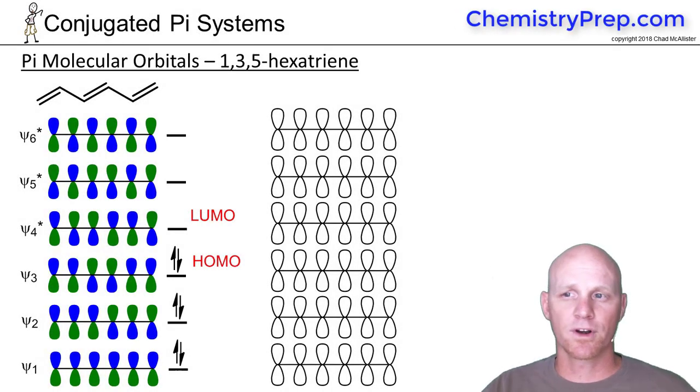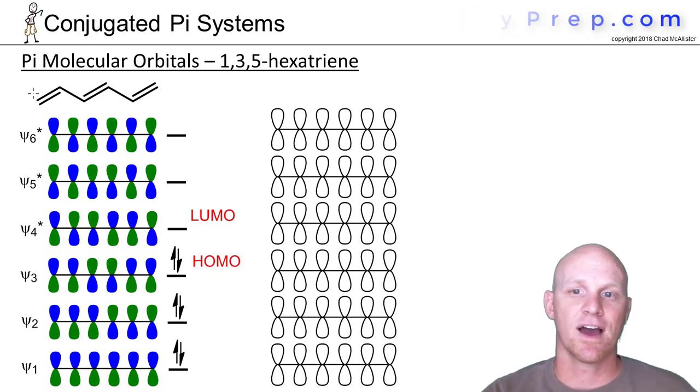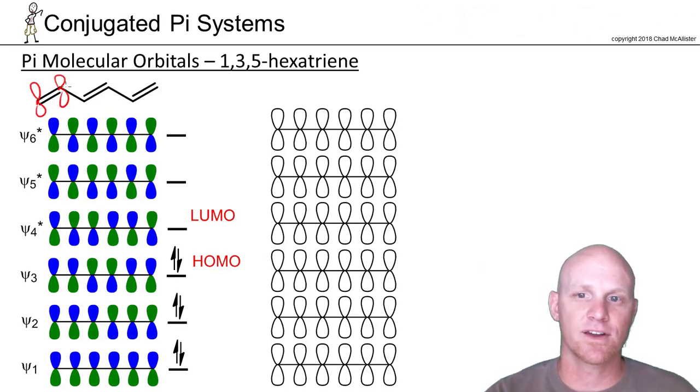Now we've got the largest conjugated system we're going to explore here, 1,3,5-hexatriene. In this case, you've got six adjacent atoms that all have a p orbital involved in this pi system.